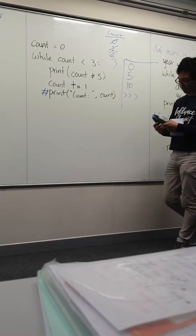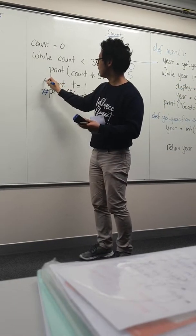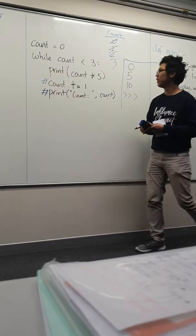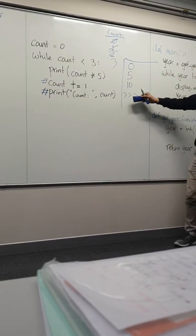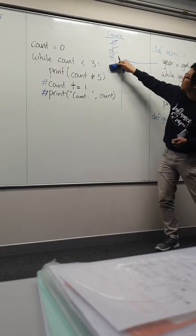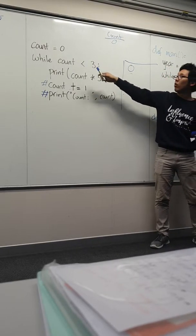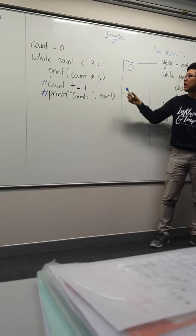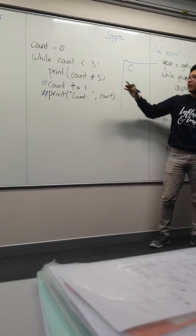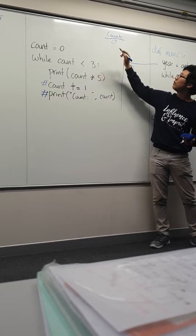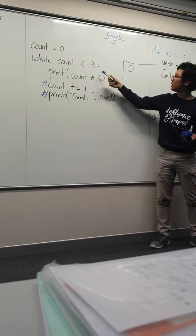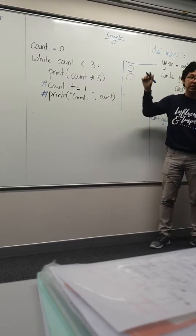Let's say if I didn't have this guy here, if I just commented it out, it would be a very different program because what would happen is I would initialize count to zero, I would have a while count less than three, correct, print count times five, print it, and then okay I'm done, go back to the top, count is still less than three, print zero, and then you can see where this is going.